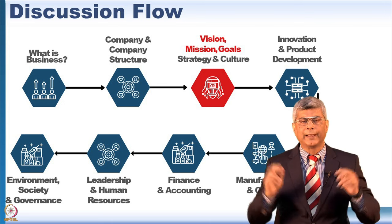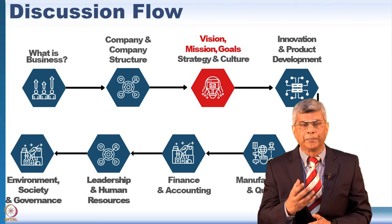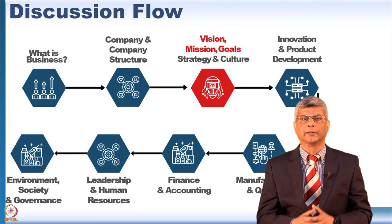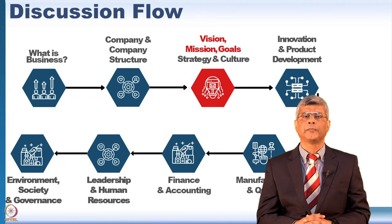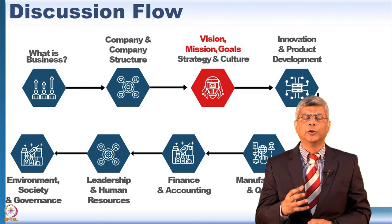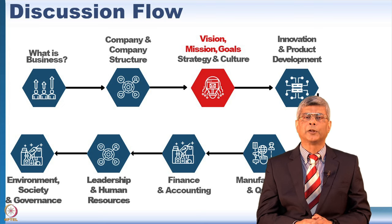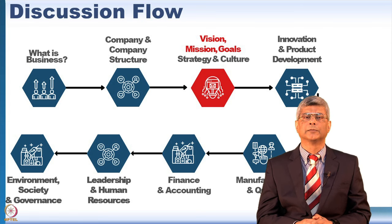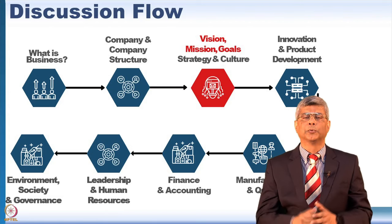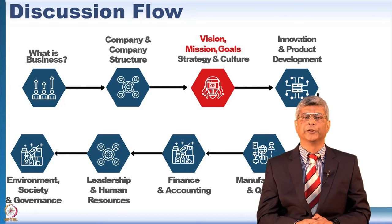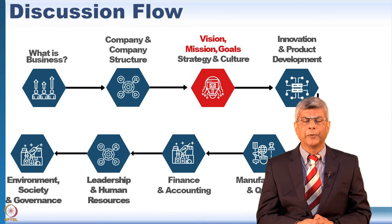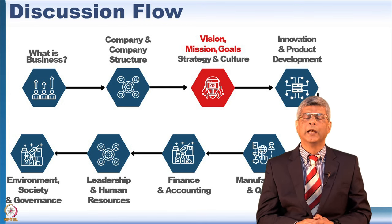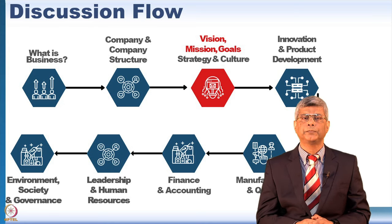After that, I'll get into the operational aspects of how a company works — starting with how companies innovate and create new products, how they mass manufacture their products, and how they do quality control. Then I'll talk about how companies account for and manage their finances, how company leaders work, what leadership is, how you manage human resources, and how good companies take care of the environment, society, and governance.